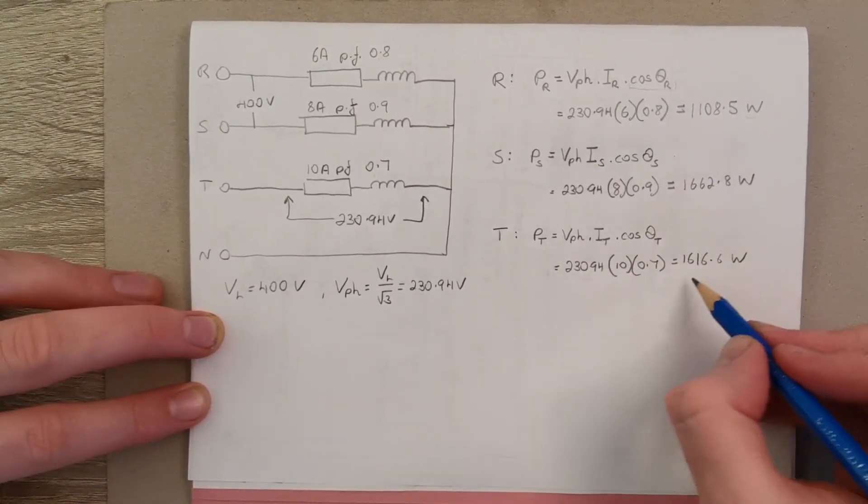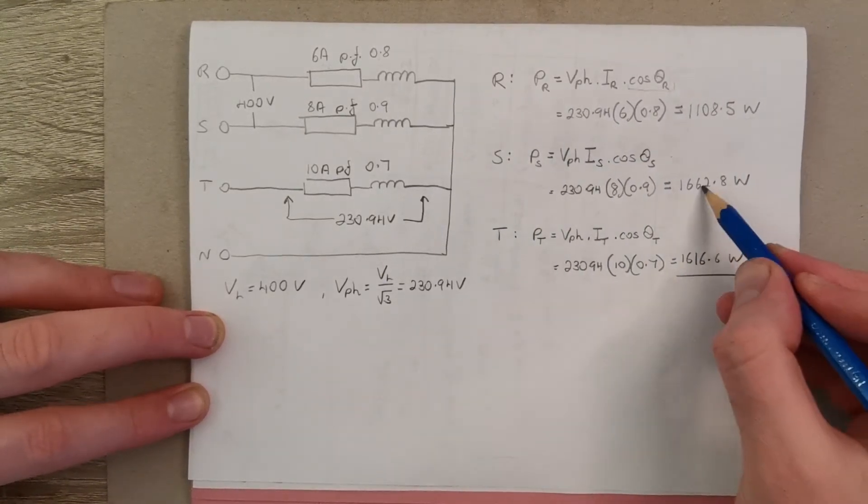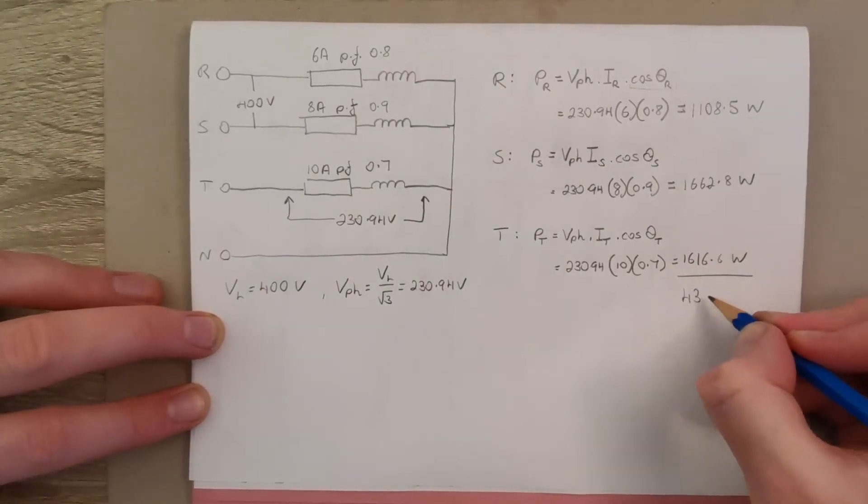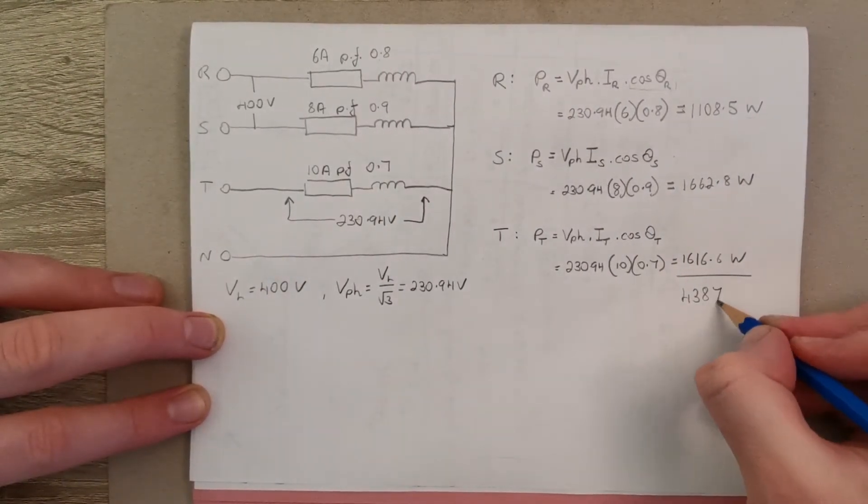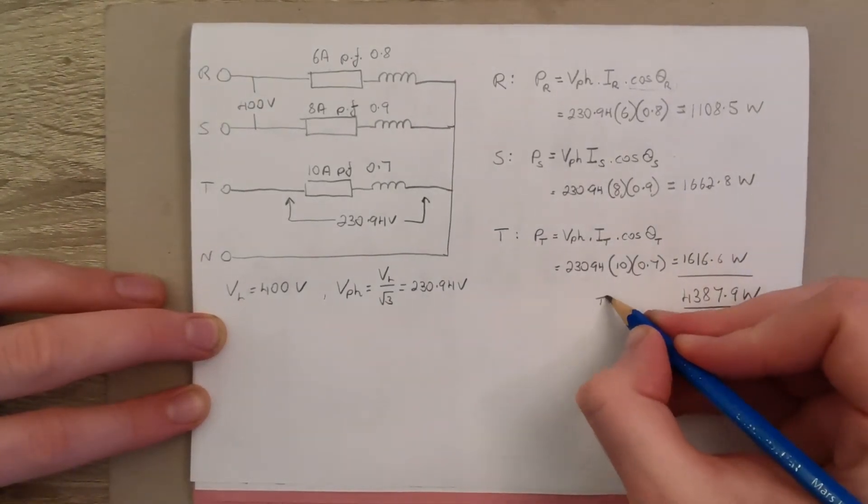So now if we want to get the total power, we just add these together, these three numbers here. And we get out 4,387.9 watts. So that's our total real power.